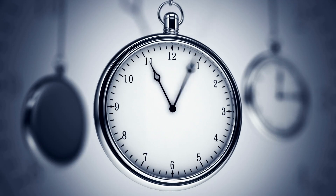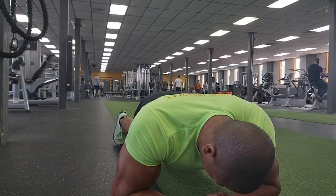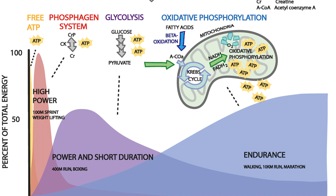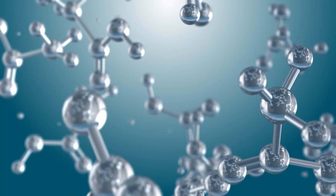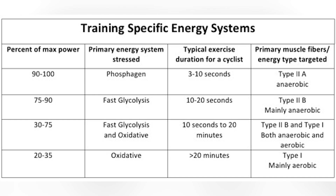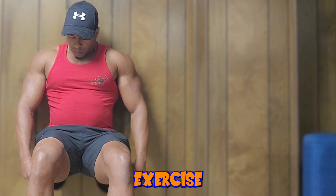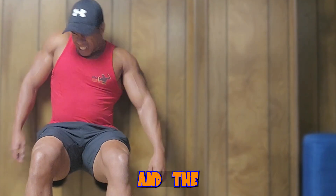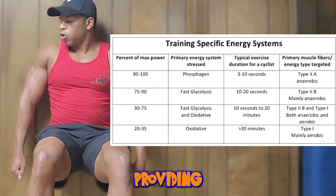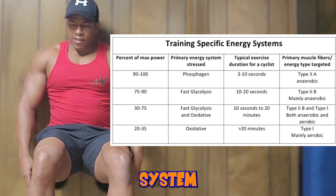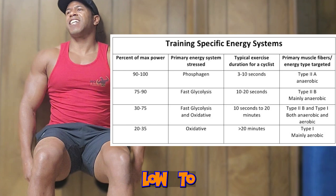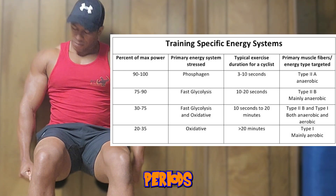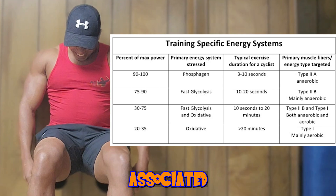But as time progresses, the contraction is going to decrease relative to that initial effort. This reduction in force production means the anaerobic energy system's contribution diminishes. The aerobic energy system, which relies on oxygen to produce energy from fats and carbohydrates, will now become the primary source of energy for the sustained contraction. The aerobic system can efficiently produce ATP for low to moderate intensity activities over long periods without the rapid fatigue associated with anaerobic systems.